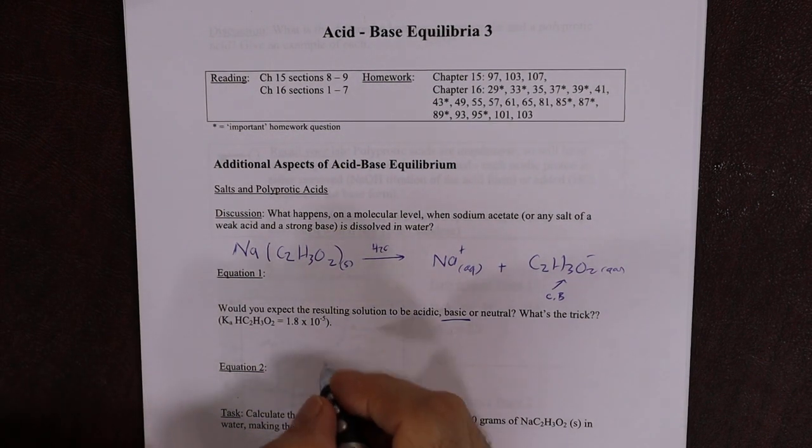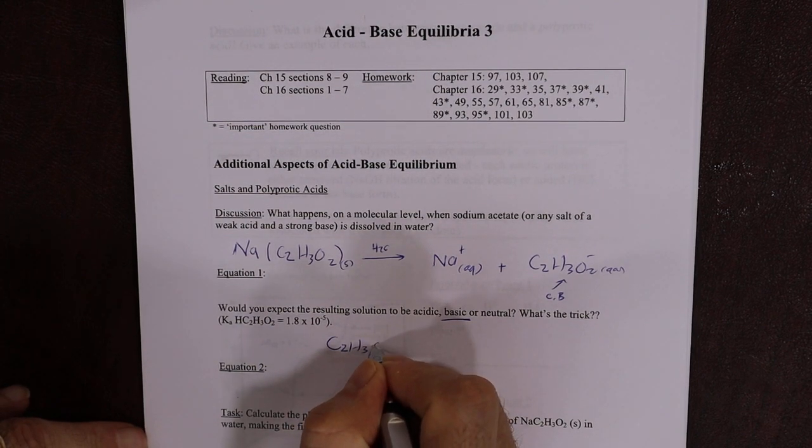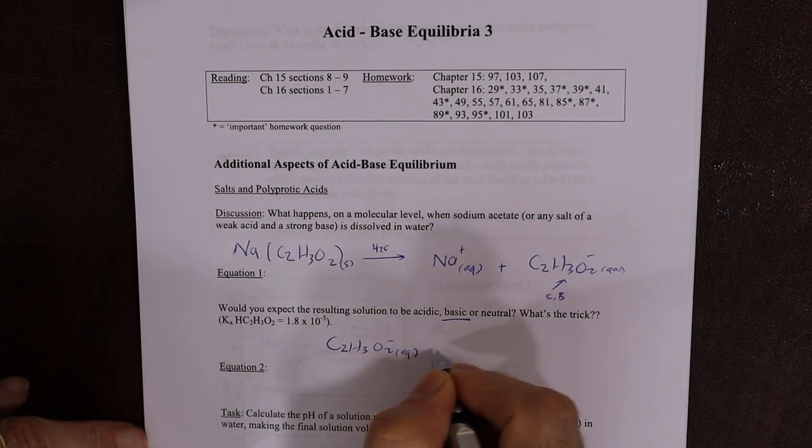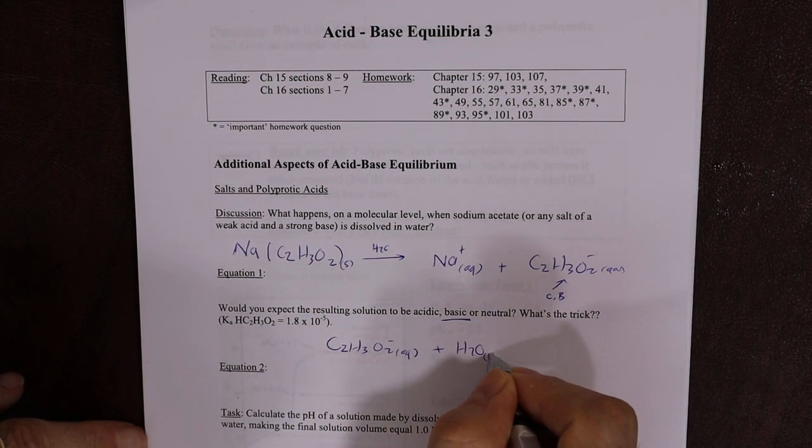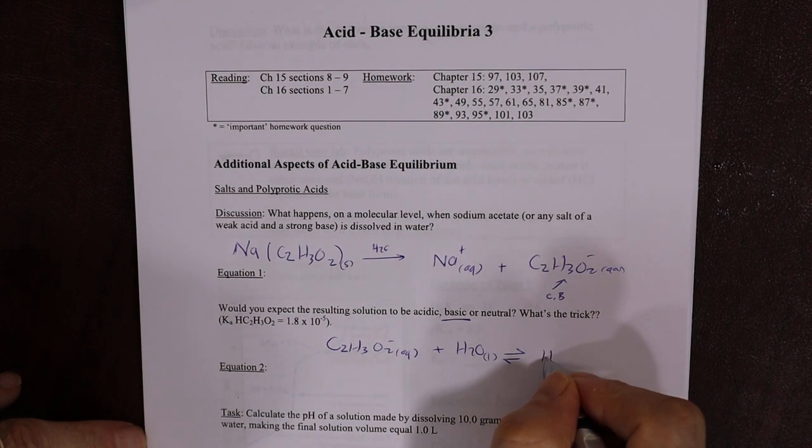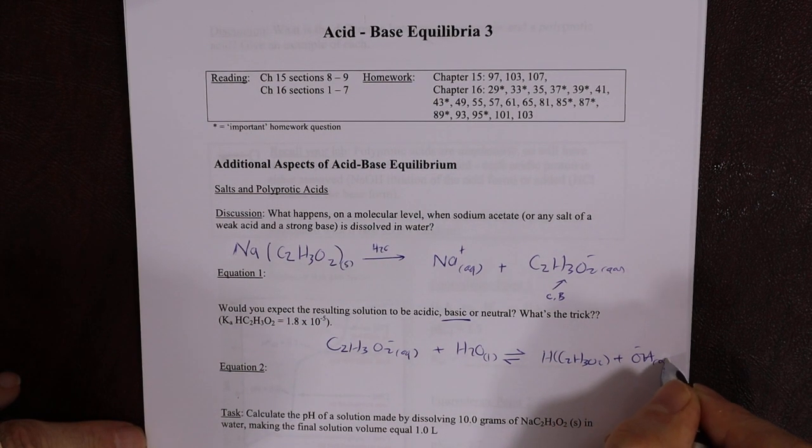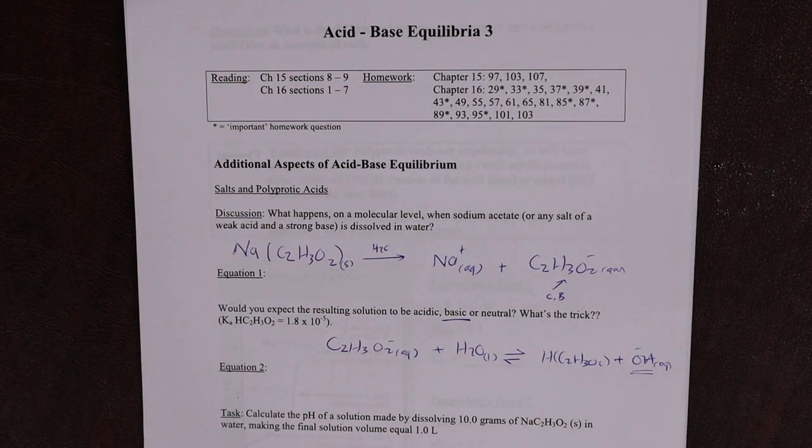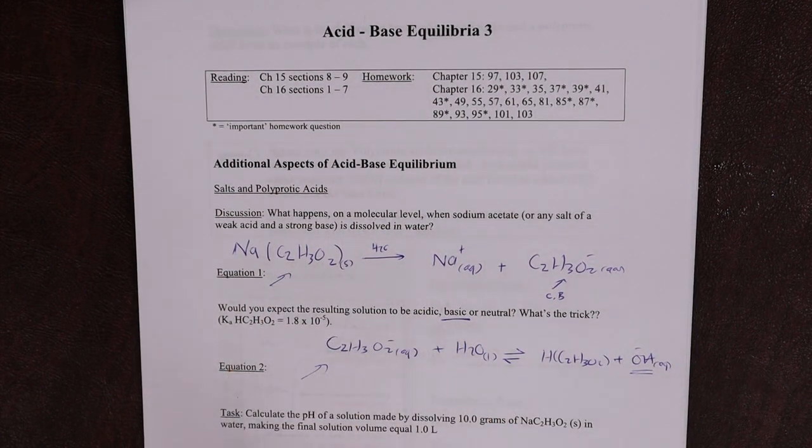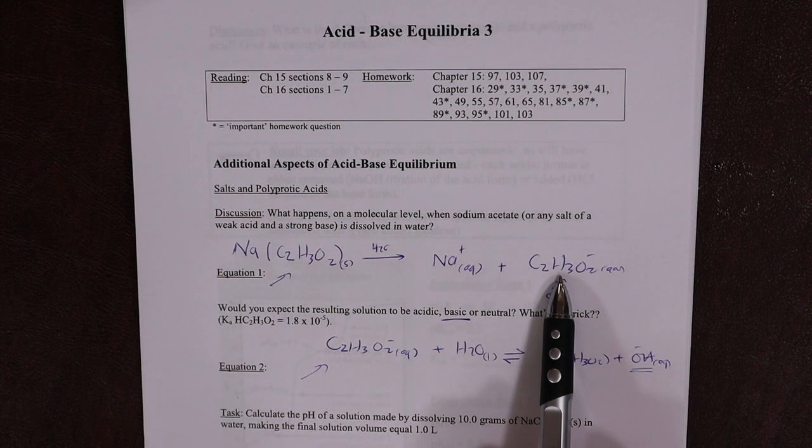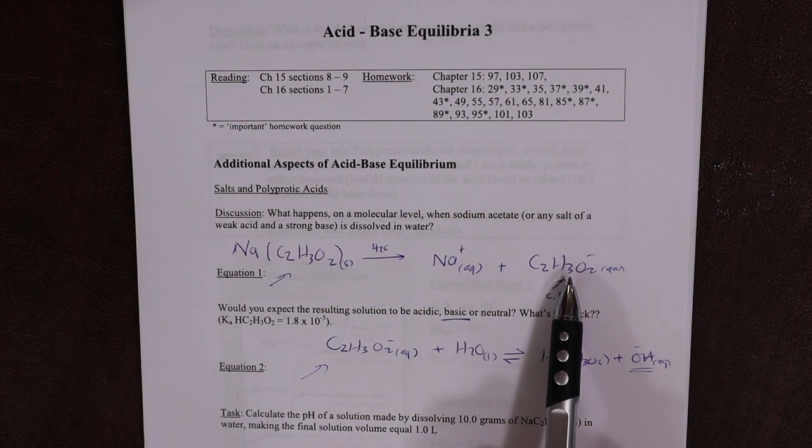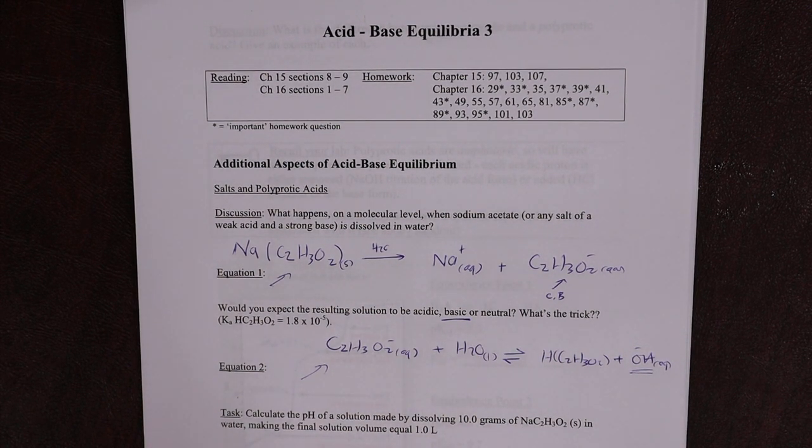What happens is, of course, the weak conjugate base we've just put into the water reacts a little bit with the water, because it's a base, to make undissociated acid and OH-. So the pH of that solution will be basic, probably somewhere between 7 and 10. So there's our second equation and there's our first equation. The initial dissolution to make the conjugate base by itself without any H+, and then that reacting with water to make OH-.